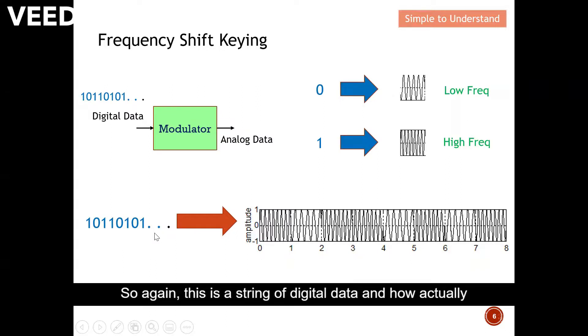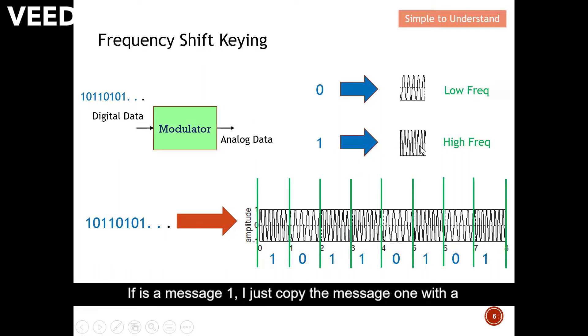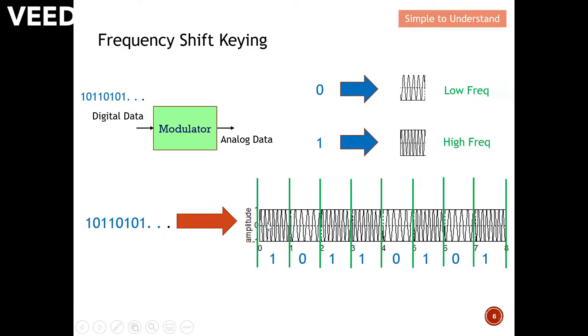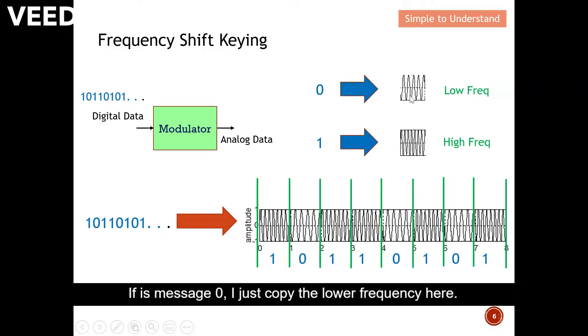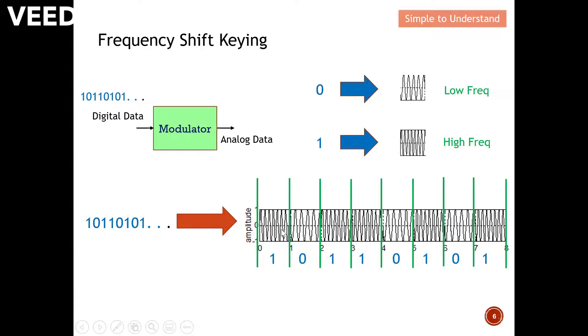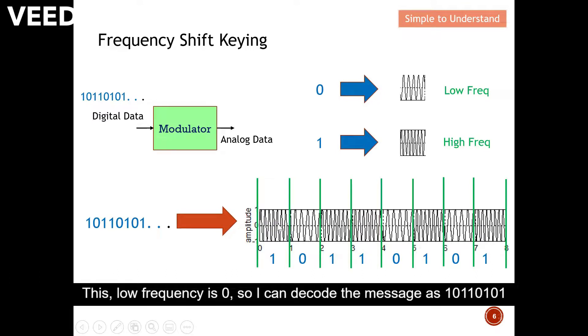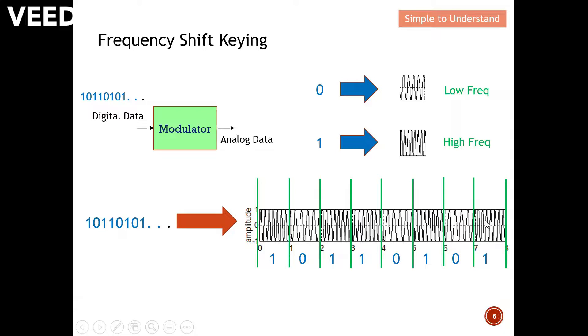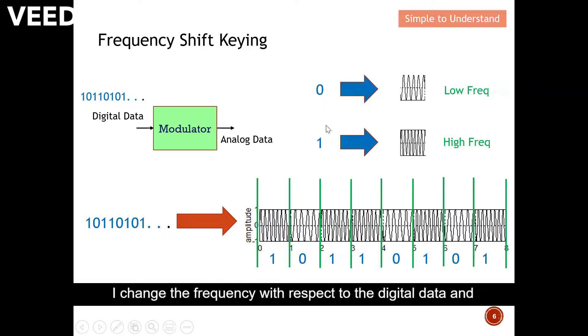Then how I actually can convert it into analog data. If it's a message one, I just copy the message one with a higher frequency inside here. If it's message zero, I just copy the lower frequency here. And if it's message one, again, I copy the higher frequency here. And from here, you can also easily decode the message. This having a higher frequency, so I know it's one. This low frequency is zero, so I can decode the message as one, zero, one, one, zero, one, zero, one. So basically, this is frequency shift keying. I change the frequency with respect to the digital data. And that's how I generate the analog output.